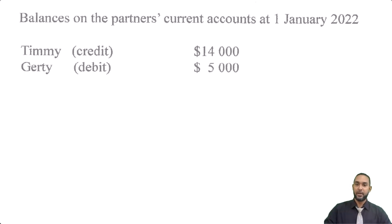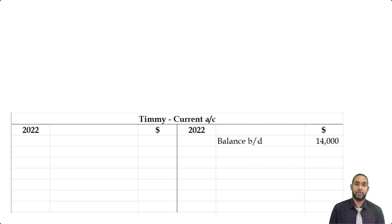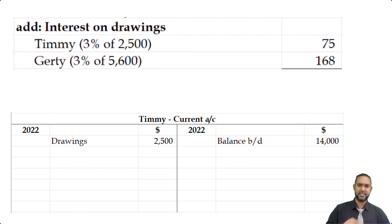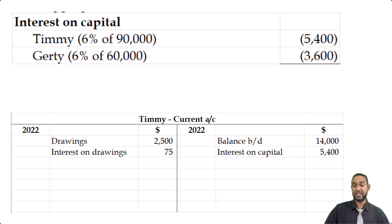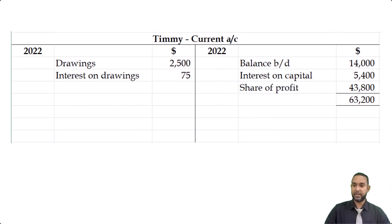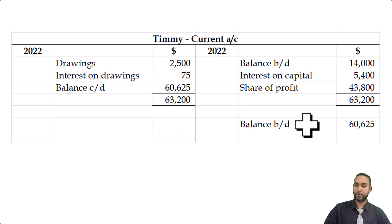Timmy had an opening balance of $14,000 on the credit side. The partner's current accounts house all of their earnings — which we just saw in the appropriation account — and withdrawals, which are drawings and interest on drawings. Timmy had $2,500 in drawings and interest on drawings of 3% of that, which is $75. Adding the earnings — interest on capital and share of profit — and balancing off the account, the credit side totals $63,200. That minus the debit side gives a balance carried down of $60,625 on the credit side.